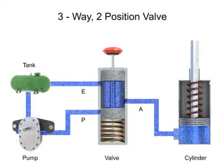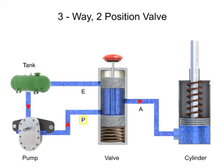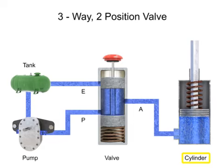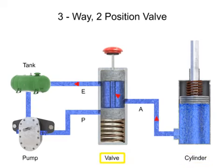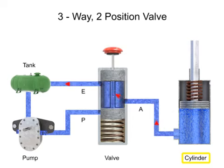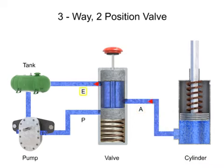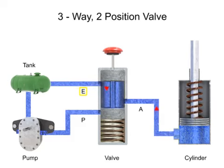Three-way directional control valves have many applications in fluid systems. One of the most common applications is for the control of single acting cylinders. In this application, fluid is pumped from a tank to pressure port P. With the valve in the normal position, fluid is blocked. When the valve is actuated, fluid flows from pressure port P through outlet port A to the cylinder. The cylinder extends and remains extended until the valve changes positions. When the valve de-energizes, the spool returns to position 1, pressure port P is blocked, and exhaust port E is opened. The cylinder retracts and fluid flows from the cylinder through port A and out exhaust port E, returning to the tank.